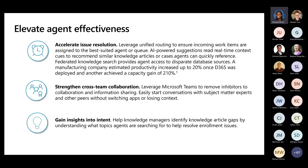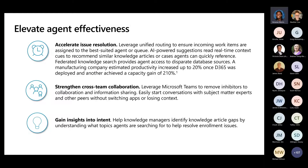We want to strengthen cross-team collaboration by leveraging Microsoft Teams to remove inhibitors, share information more readily, and connect with other resources within our organization — all from within the experience — to get help from subject matter experts. We also want to gain insights into the intent and help managers identify potential knowledge article gaps by understanding what topics are being most frequently searched, then taking a more proactive stance about helping both constituents and agents resolve any issues that might occur.